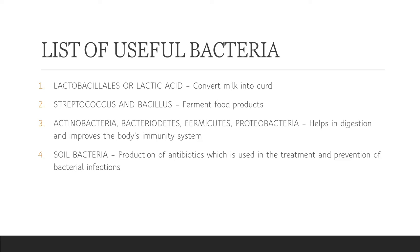Actinobacteria, Bacteroidetes, Firmicutes, and Proteobacteria — these bacteria are used for digestion and immunity in the body. Repeating those names: Actinobacteria, Bacteroidetes, Firmicutes, and Proteobacteria.